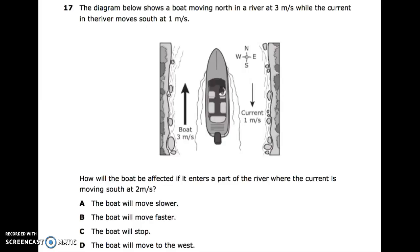Number seventeen: the diagram shows a boat moving north in a river at 3 meters per second while the current moves south at 1 meter per second. How will the boat be affected if it enters a part of the river where the current is moving south at 2 meters per second? A: the boat will move slower. B: the boat will move faster. C: the boat will stop. D: the boat will move to the west.